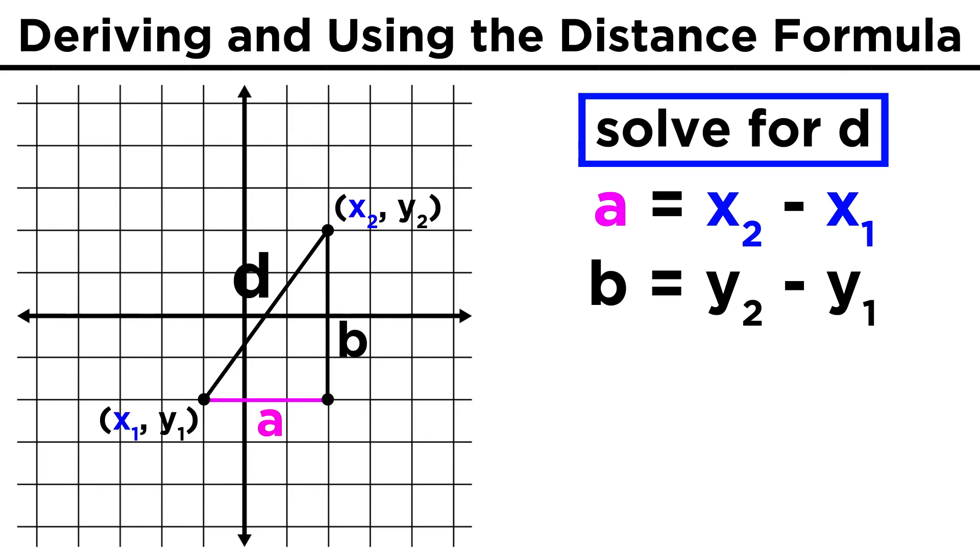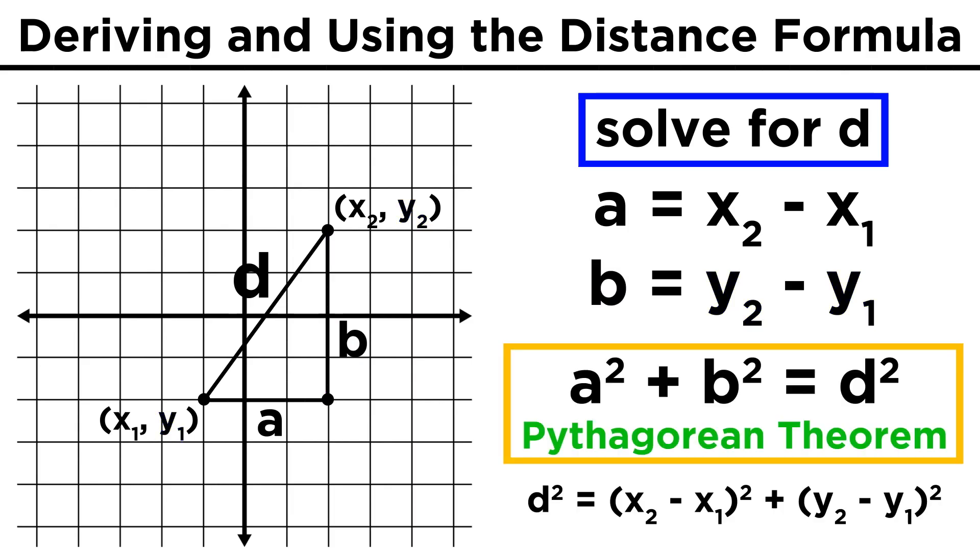The legs can be expressed as the difference between the respective points that mark their ends. This horizontal line segment has a length of x2 minus x1, since it only moves in the x direction. The vertical line segment has a length of y2 minus y1, since it only moves in the y direction.